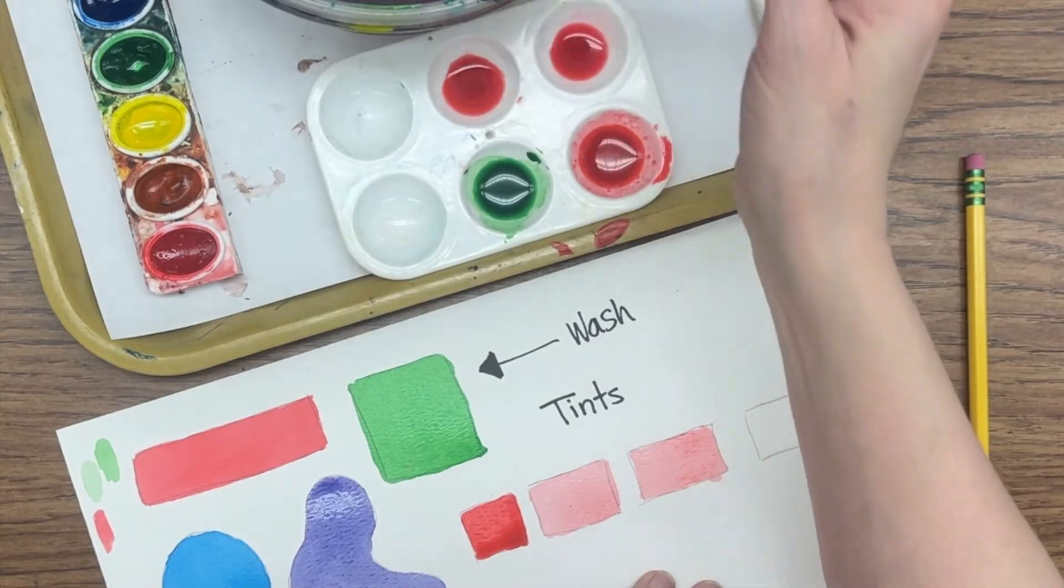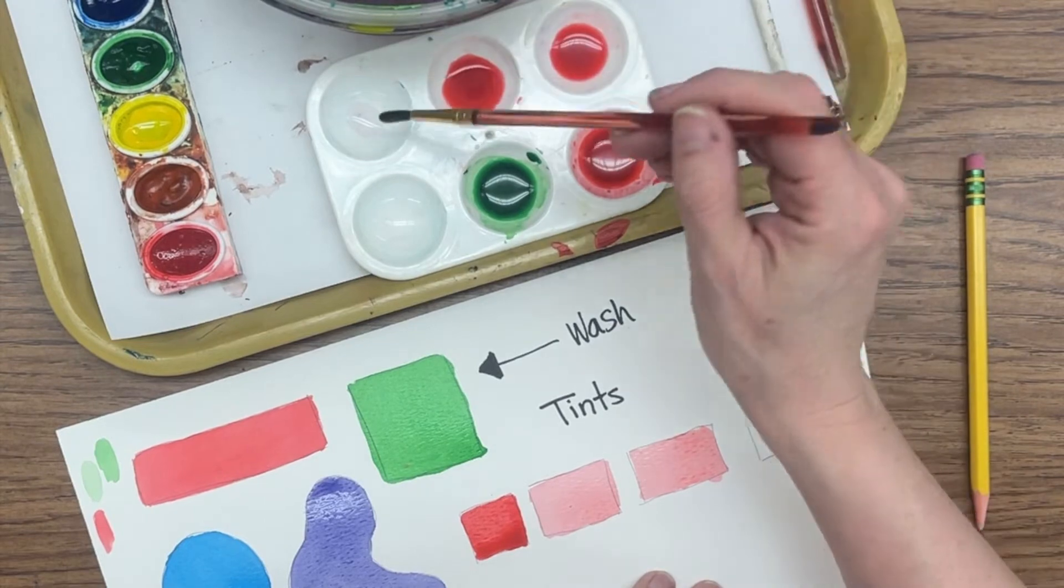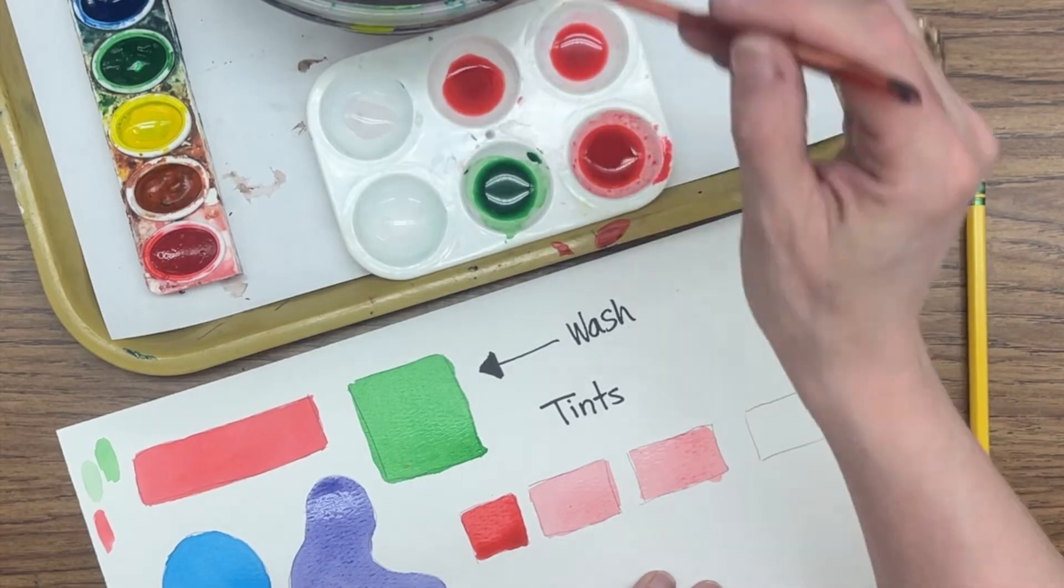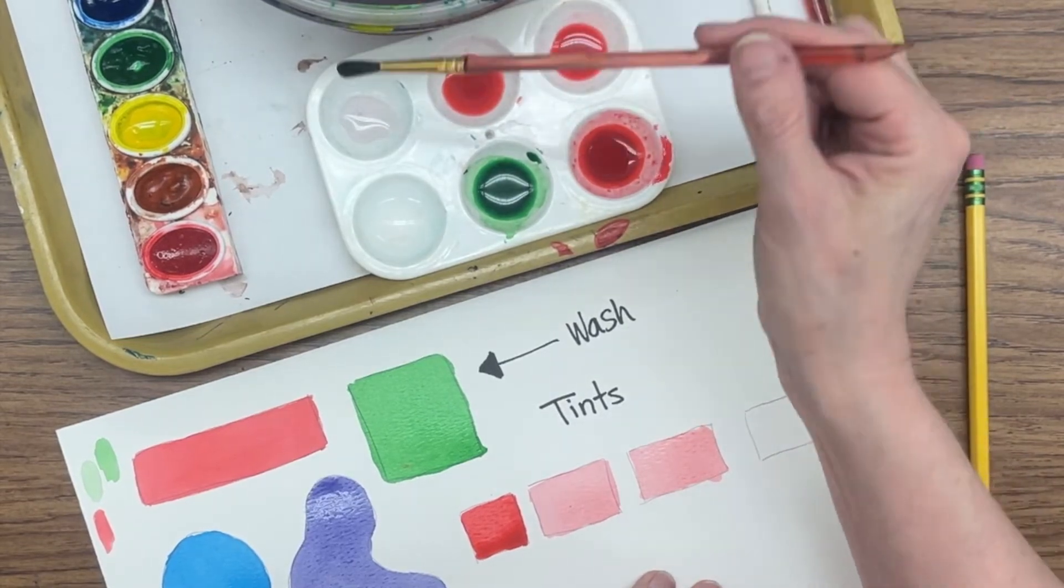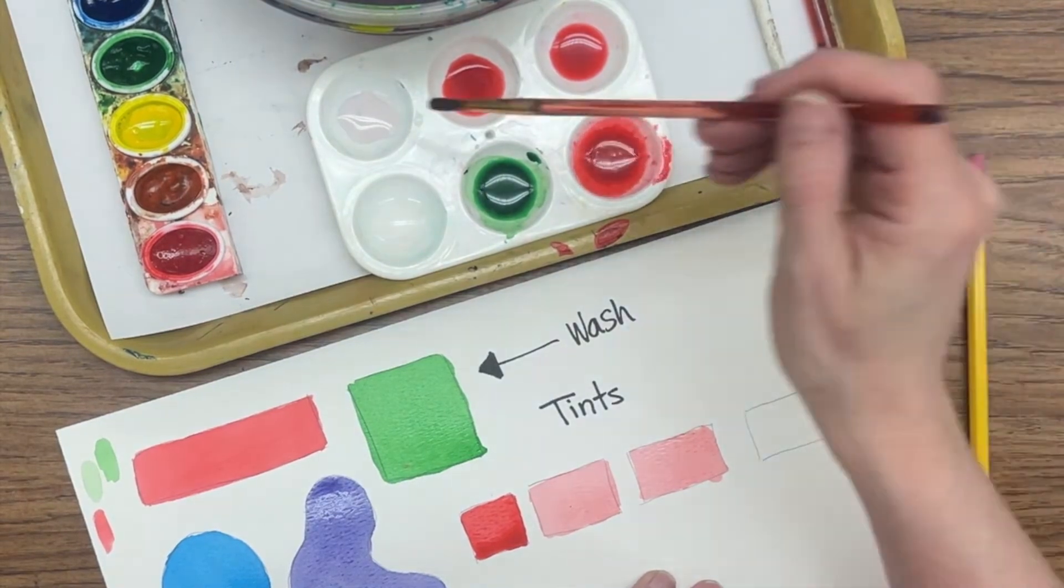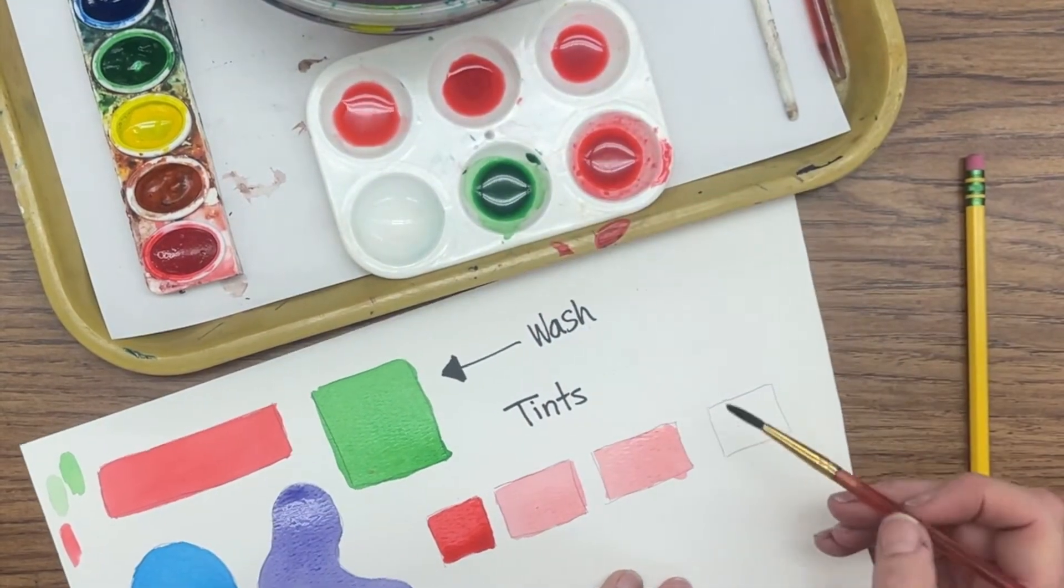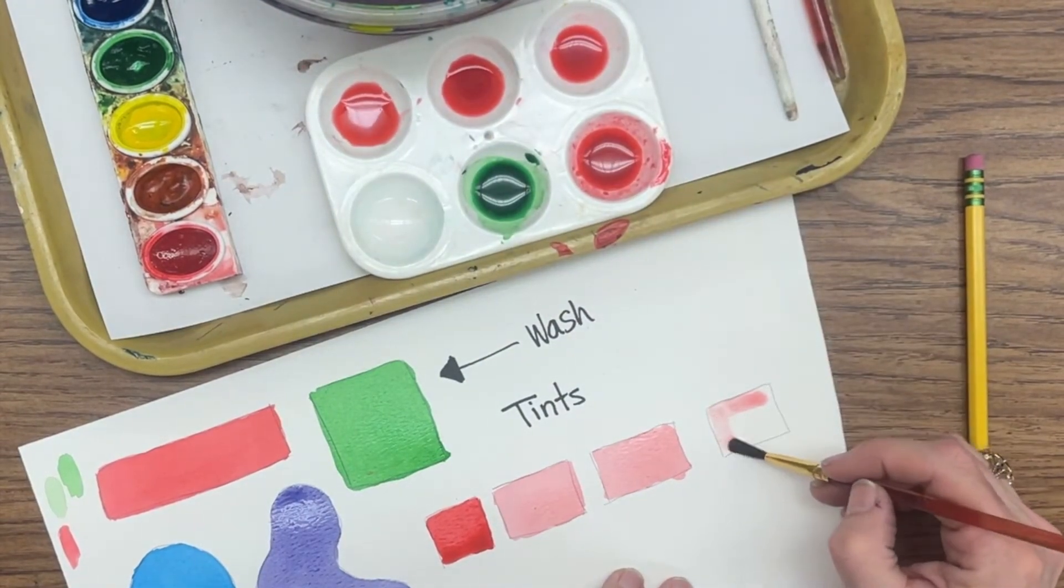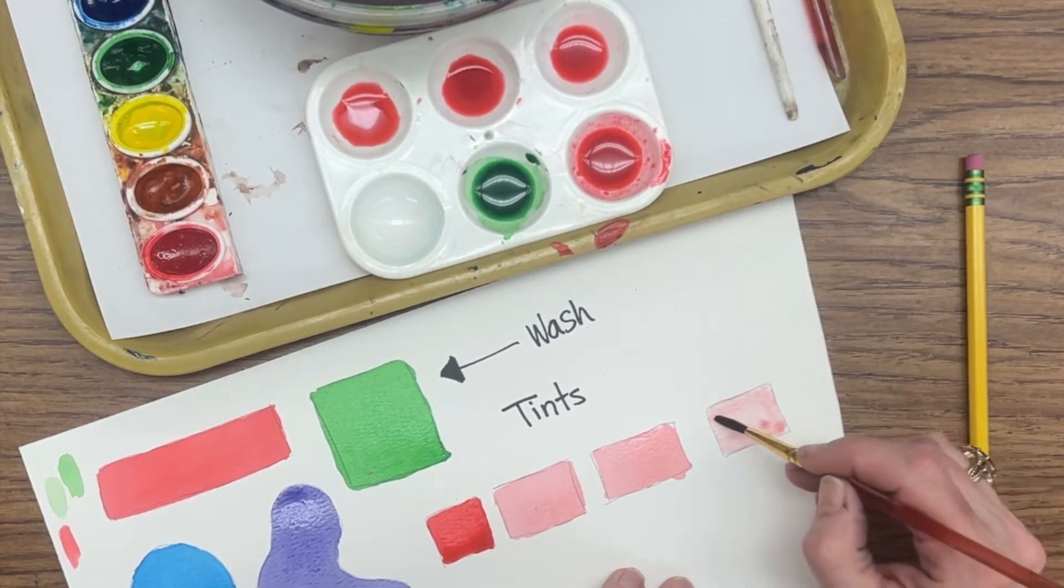So now I'm going to put one, two, three, four, five, six, seven, eight. Get one brushful of paint and add it to my eight drops of water. So for lighter, maybe that was a problem. I didn't touch off my excess. We'll go back and test that.